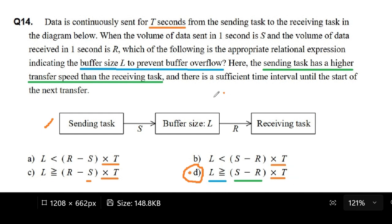And that's why I had to think more about what is this buffer size L, what is happening with this buffer size L. And it says here what should be the appropriate relational expression indicating the buffer size L to prevent buffer overflow. So, therefore, if we understand that we are sending tasks to the receiving task,